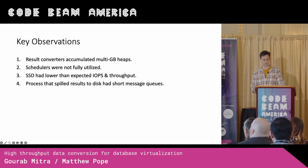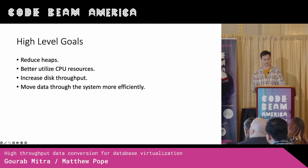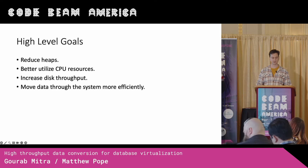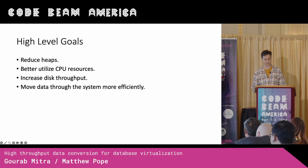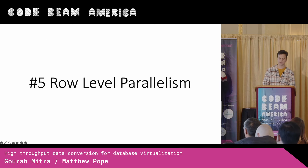From these observations, we came up with a list of high-level goals. First, we wanted to reduce heap sizes. Next, we wanted to better utilize CPU resources by getting those schedulers active. We wanted to increase disk throughput because we saw that was relatively low. And we generally wanted to move data through the system more efficiently. We made about six changes in total, but we're going to talk about the two most impactful.